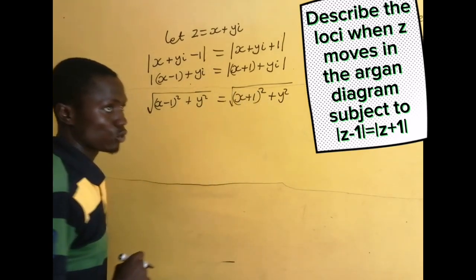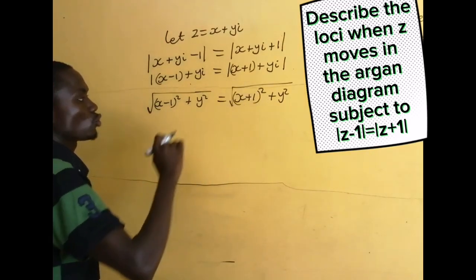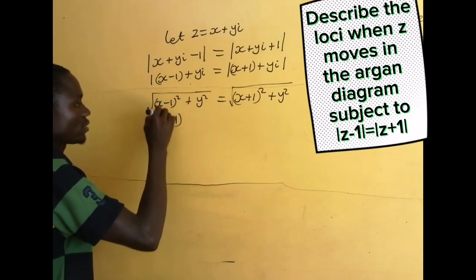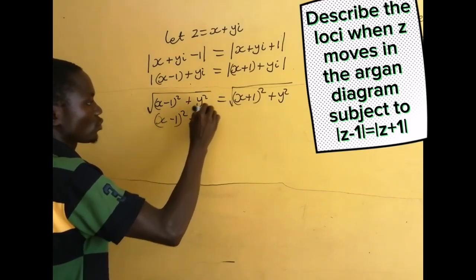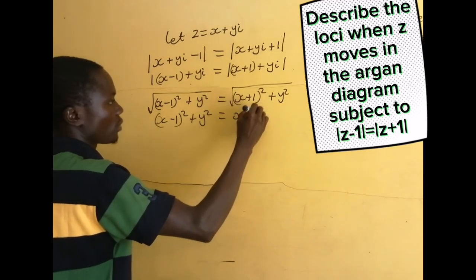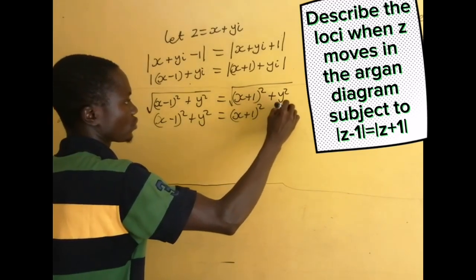So if we square both sides, we have (x - 1)² + y² = (x + 1)² + y².